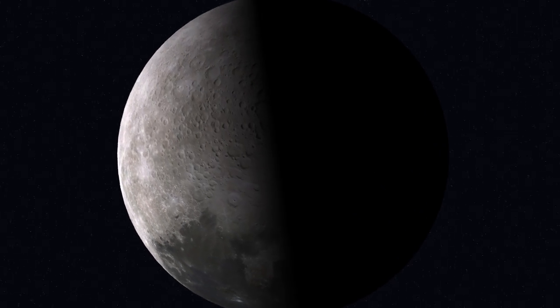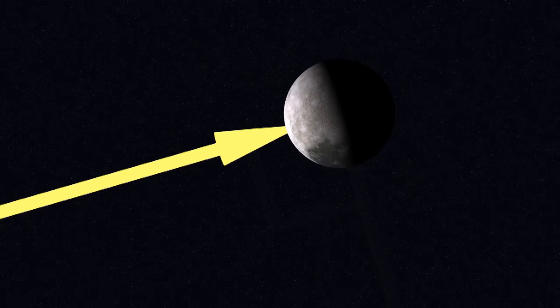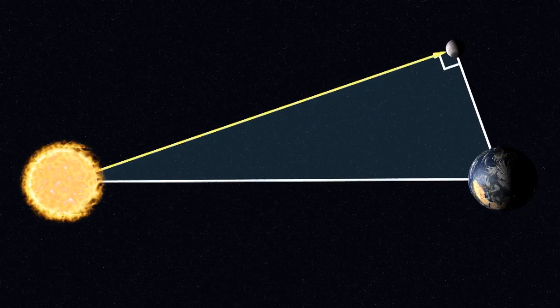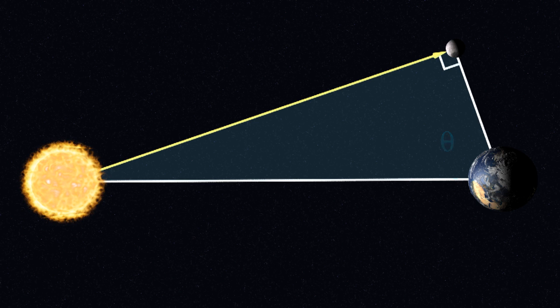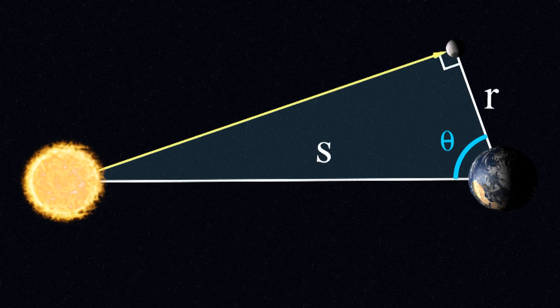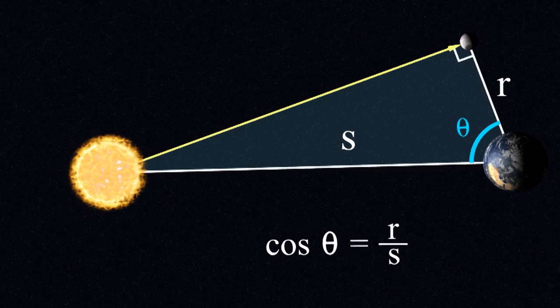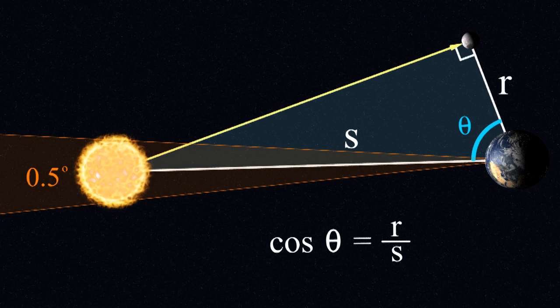Aristarchus realized that during a half moon, the sun, the moon, and the Earth form a perfect right angle. By measuring the angle theta between the sun and moon, we can calculate the ratio of the distances to the sun and moon as cosine theta. Furthermore, he knew that the sun takes up half a degree of the sky.